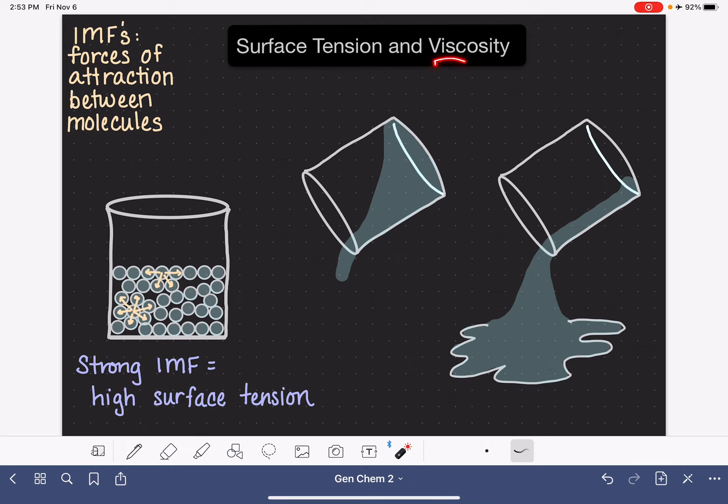Now moving on to viscosity. Viscosity is a measure of a fluid's resistance to flow. And I'm showing these two beakers as a way of hopefully describing two different extremes for viscosity.